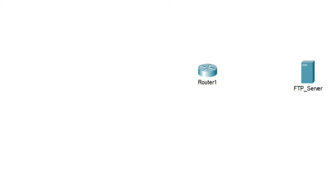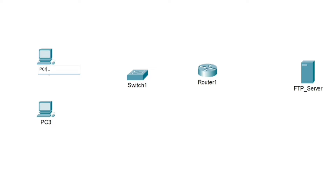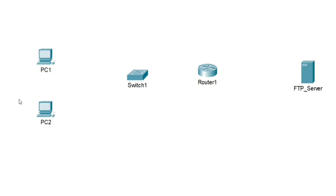Then we are going to take one switch here to connect multiple computers. Let me take two PCs — PC one and PC two. From PC number one, I am going to upload some file to the FTP server, and I will try to download that file on PC number two.